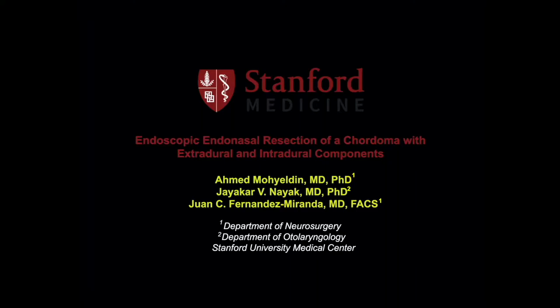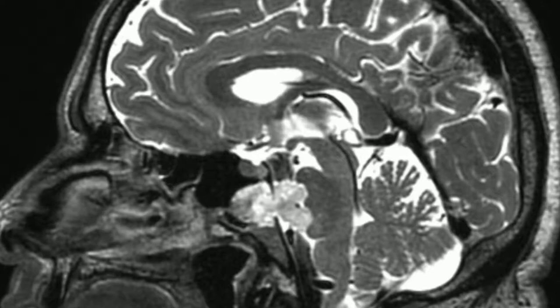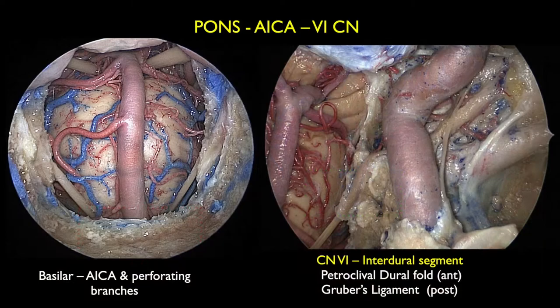This is Dr. J.F.M. at Stanford presenting the case of a 58-year-old male patient with an incidental finding of a clival mass compatible with clival chordoma. We can see the close relationship of the tumor with the ICA and the 6th nerve. This is the key anatomy to be reviewed in this case.